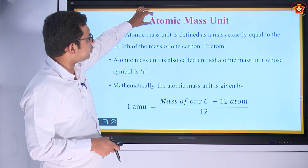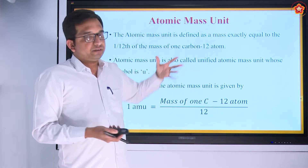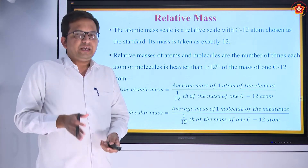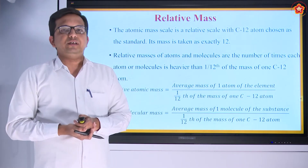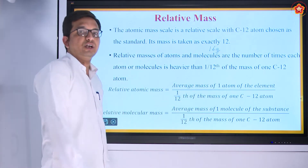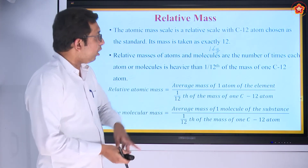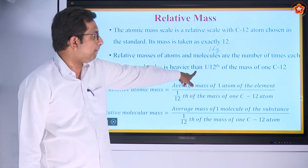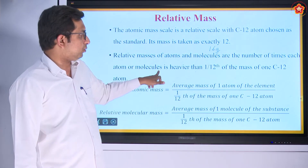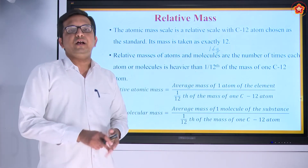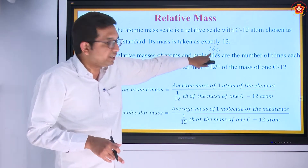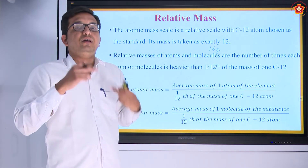Along with AMU, we also have something called relative mass. The atomic mass unit was defined with respect to carbon, but we have to look at the masses of other elements too. Relative mass means: take 1 as a standard and compare its weight with other atoms. For example, in the periodic table, mass of oxygen is 16. That 16 means oxygen is 16 times heavier than the standard — which is 1/12th the mass of one carbon atom.